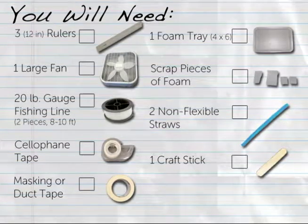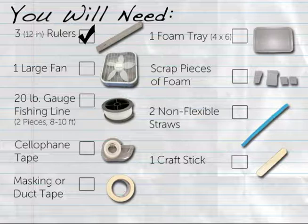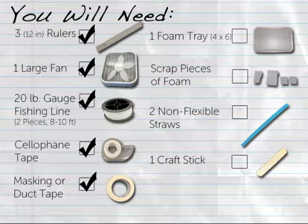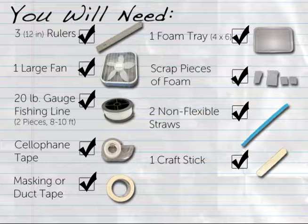To construct one sail track for your classroom, you will need the following materials: three 12-inch rulers, two for anchoring the sail track's raft and one for measuring; a large fan, box fans work the best; two pieces of 20-pound gauge fishing line, each piece 8-10 feet long; cellophane tape; masking or duct tape; a foam tray sized at least 4 inches by 6 inches, as well as some additional scrap pieces of foam; two non-flexible plastic drinking straws; one craft stick for testing assembled rafts and track movement.